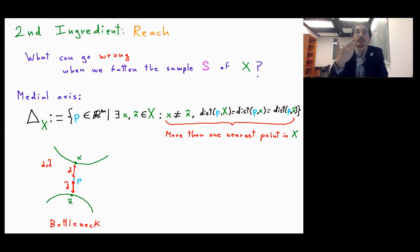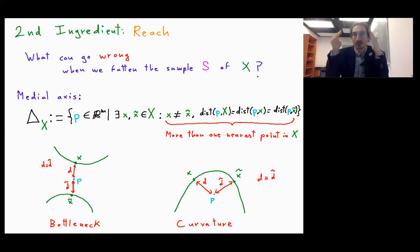In the bottleneck case, this emerges because I am between the two branches that form a bottleneck. In the curvature case, this is formed because my point is pointing to two different points in the curved zone.